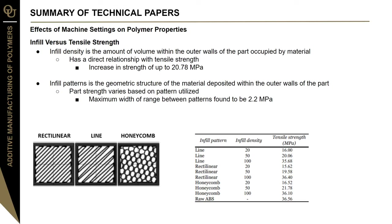What we'll look at now is the effects of machine settings on the polymer properties of final parts. First is infill versus tensile strength. Infill density is the amount of volume within the outer walls of the part occupied by material. Through experimentation, it was found to have a direct relationship with tensile strength — there was an increase of up to 20.78 megapascals when density was varied, because as density increases, there are fewer voids and loads can be dispersed over a larger surface area. Infill pattern — the geometric structure of material deposited within the outer walls — also affects part strength, though not as significantly, with a maximum range of 2.2 megapascals between line, rectilinear, and honeycomb patterns.